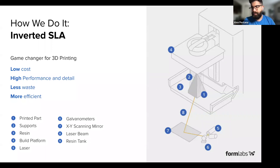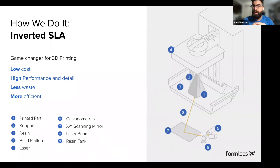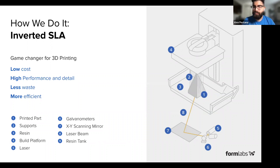You can see this here: we have a traditional set of lasers, galvos, and a mirror reflecting onto the bottom of our build tank, and the build platform pulls the part out of the resin. Not only does it look really cool, but it is also a much more efficient way of doing SLA versus the traditional process.